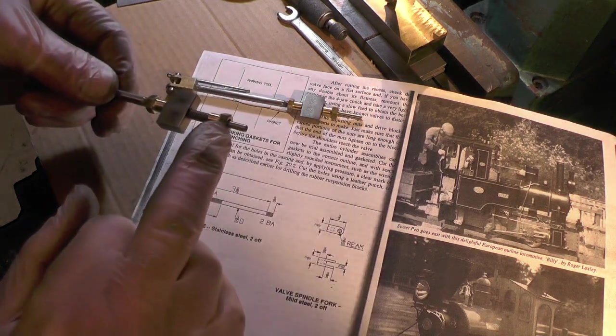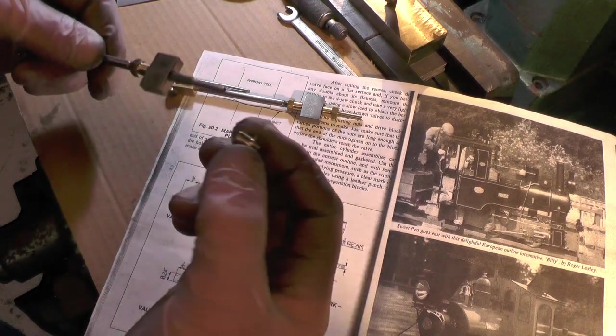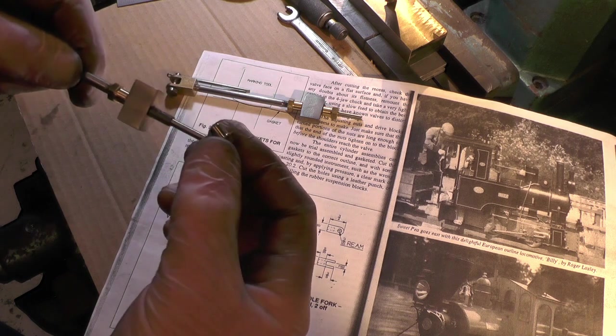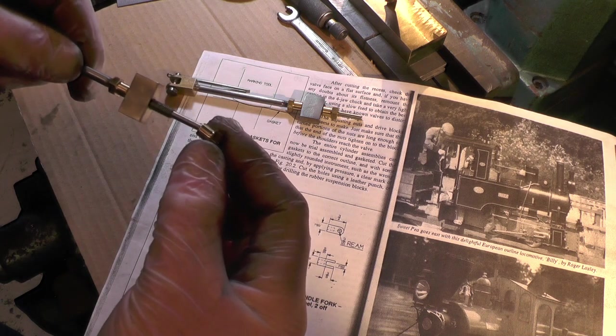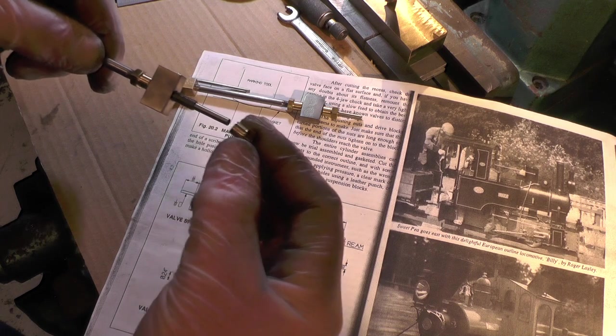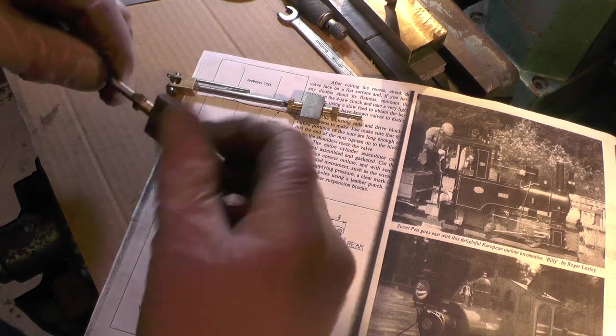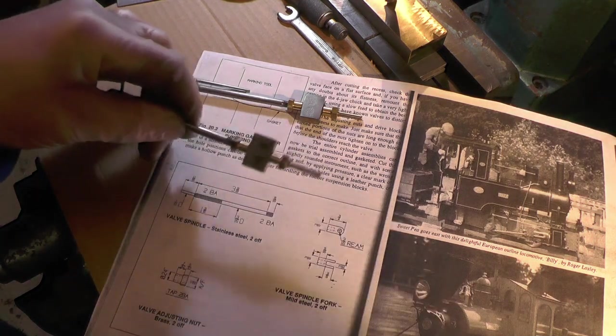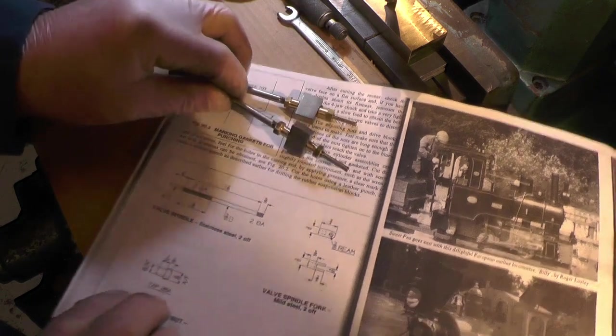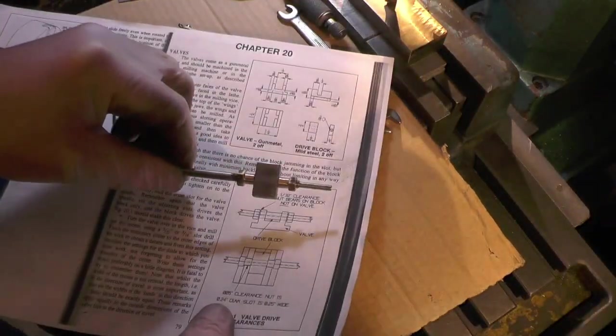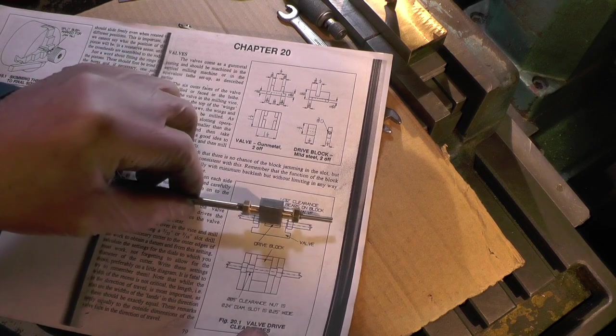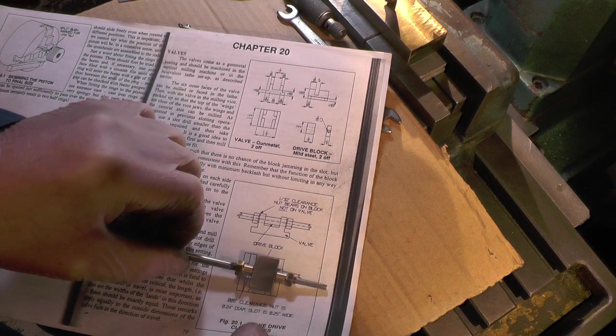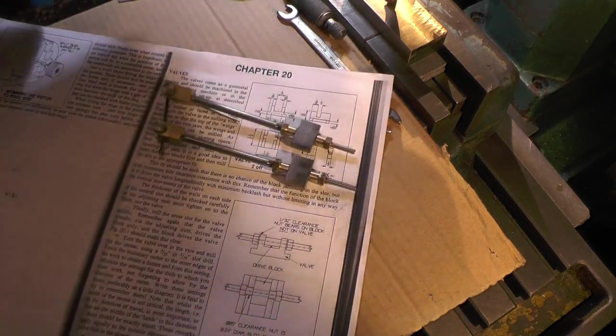And these nuts are just made in brass, and it's just a straightforward hexagonal brass with a plain shank on it, tapped out 2BA. And all that does is clamp the valve block in position once it's situated into the valve in that position there. And there's two of everything made there.